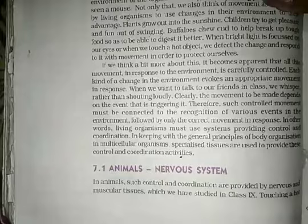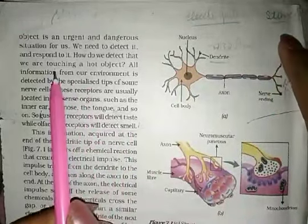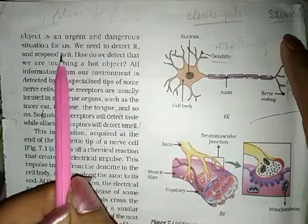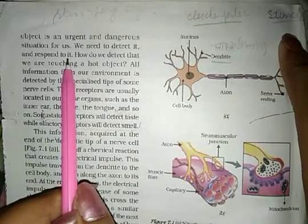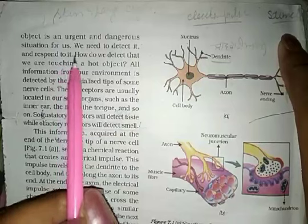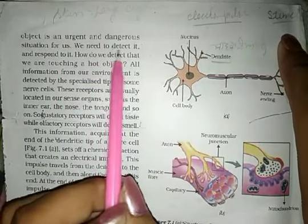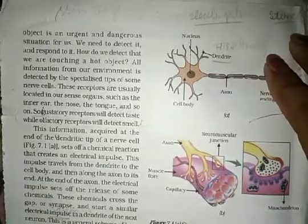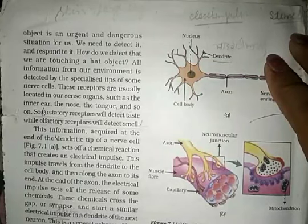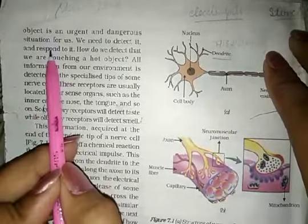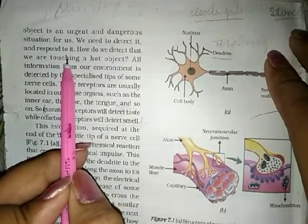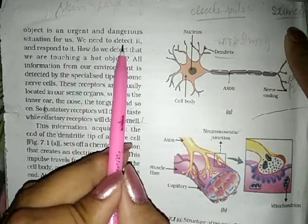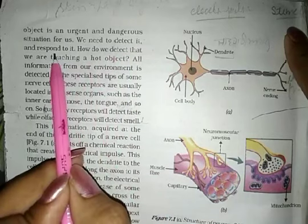Consider touching a hot object — that is an urgent and dangerous situation for us. When you touch a warm or hot thing, you know that it is dangerous. We need to detect it — we need to know that we have a hot object — and we need to respond to it.